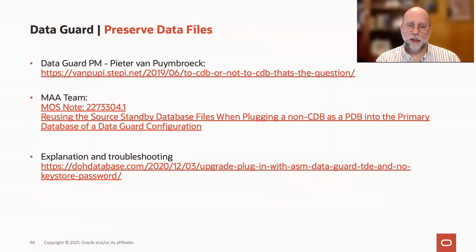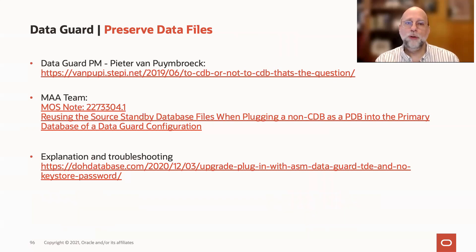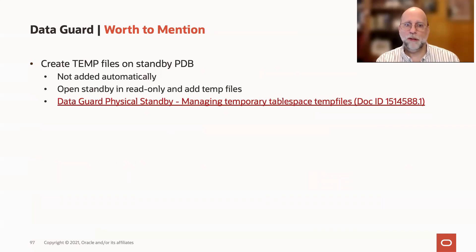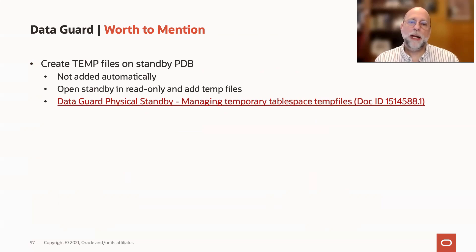For references — I know that was kind of high level and I didn't go through step-by-step of how to preserve the data files. Peter van Pornbroek, the lead product manager for DataGuard, has a nice blog post about how to do this. The MAA team — maximum availability architecture — has their usual detailed treatment in a support note, and Daniel has a blog post on troubleshooting this environment. One last thing: when creating a PDB in a standby environment, temp file management in DataGuard — temp files that get added after the standby is created are not handled automatically. So when you have temp files in the PDB, you would need to add those yourself. There's a MOS Note reference to that.